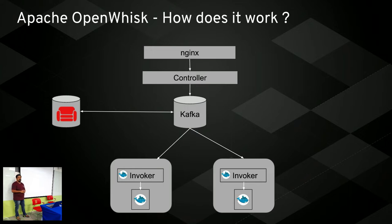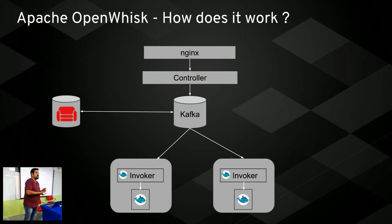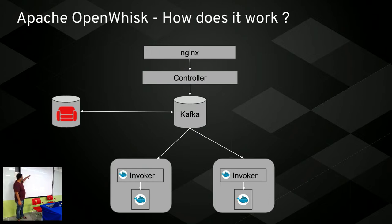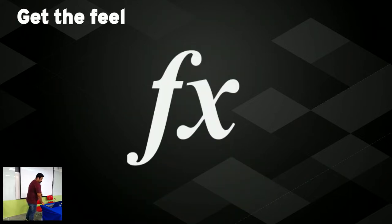Invokers are essentially a Docker engine - each node will have one invoker. Each invoker is a Docker container, and for each type of function runtime - Java, JavaScript, Node.js, Python, Go - there is one invoker. The invoker takes care of starting a new Docker container which runs your code and then exits. This is the high-level view of how OpenWhisk works.